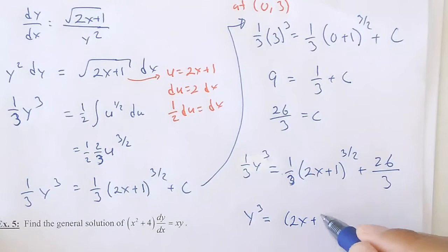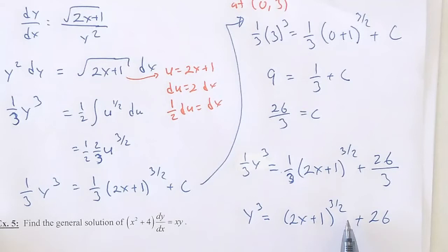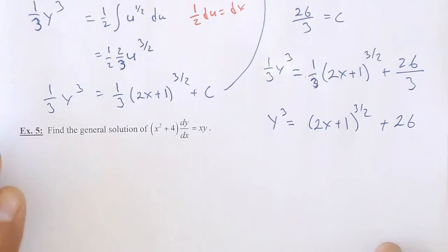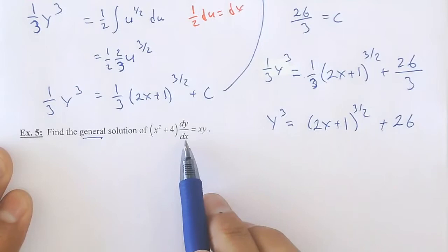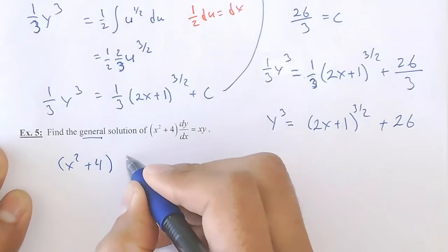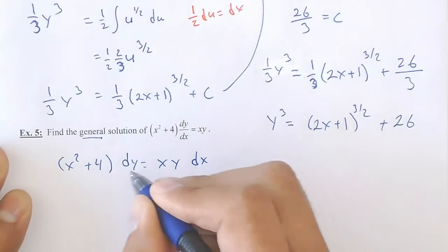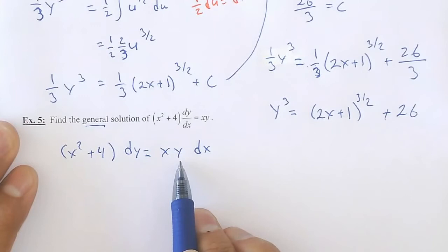Number 5: find the general solution. General — so that's nice, I don't have to find a constant. I'll start by moving the dx over there. I strongly suggest you pause and try it. I have x over here, which I'm going to divide by that parenthesis to bring it here, and I have a y over here, which means I have to divide by y to bring it over there. So two steps: divide both sides by y, and divide both sides by that parenthesis.